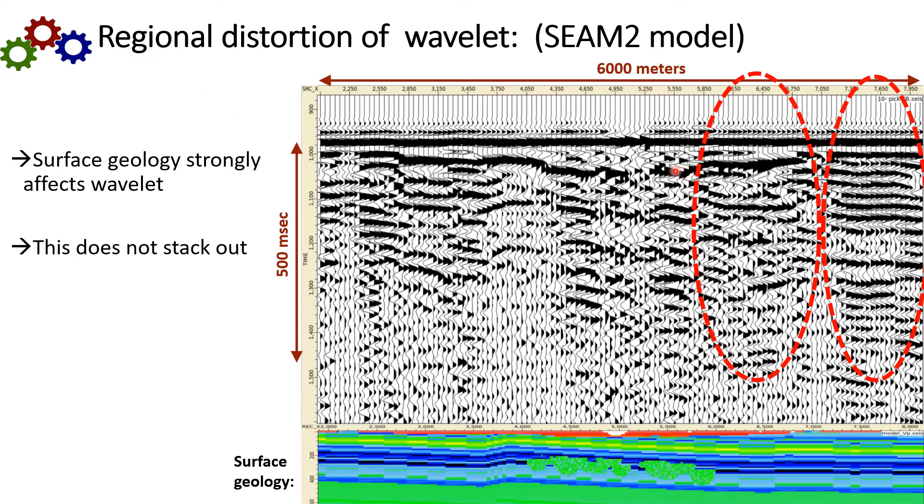So here's the slide I showed you earlier. That shows you the source wavelet distortion along the SEAM model. And you see over here on the right side, where I've put these circles, you notice some very consistent distortion of the source wavelet. These are over a size of about a thousand meters. And you can see that these effects are going to stack in, just like the original arrival will be stacking in.